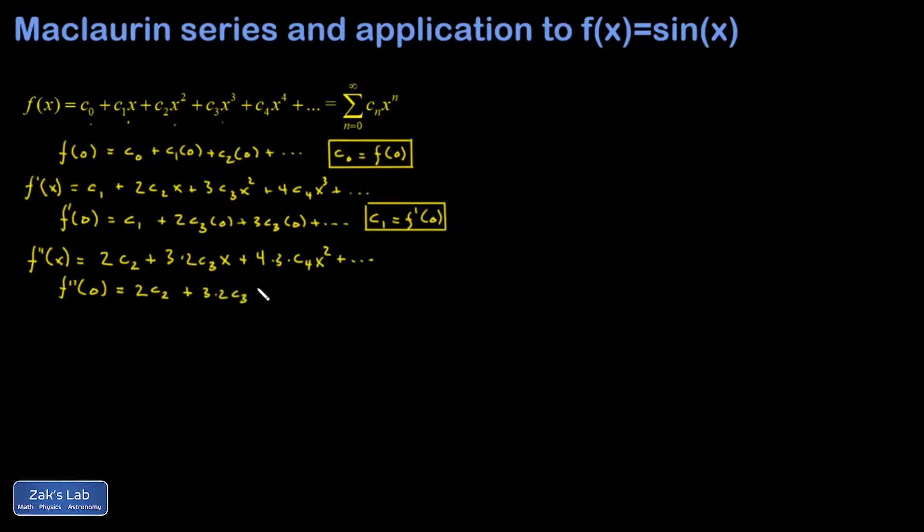Again, all the rest of the terms vanish because they have x's in them. And this time, I get c2 is equal to 1 half f double prime of 0.